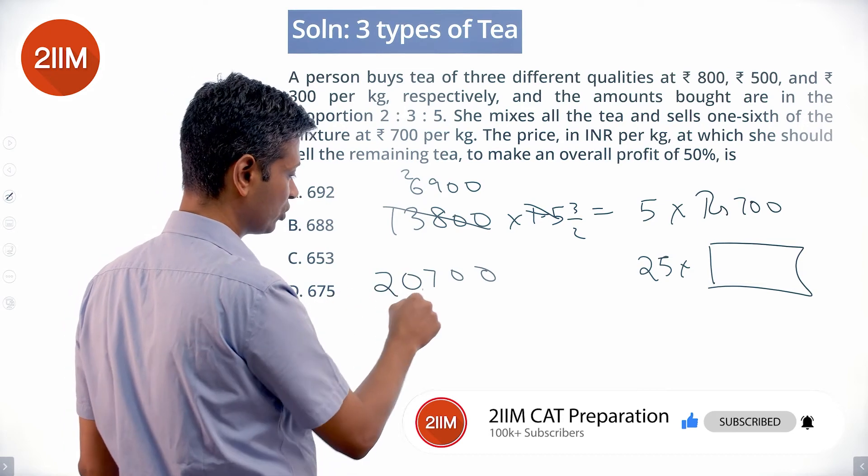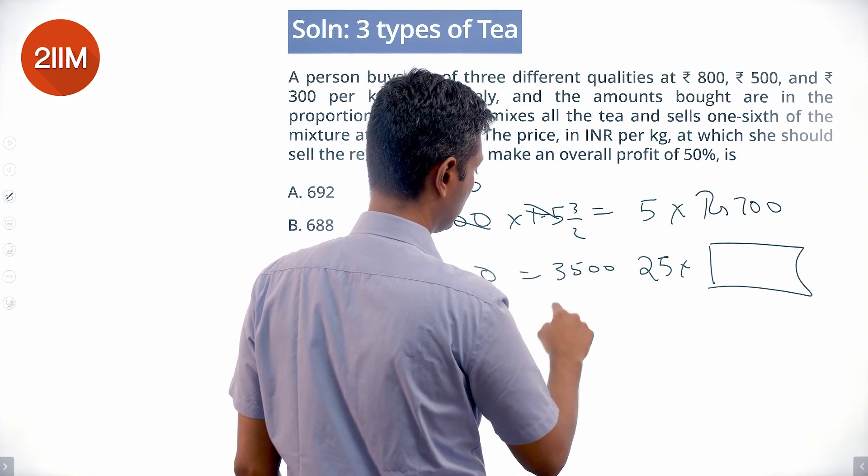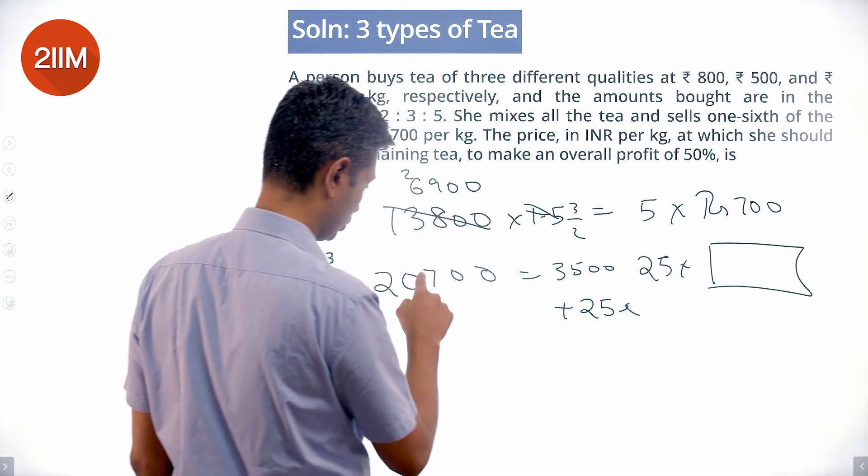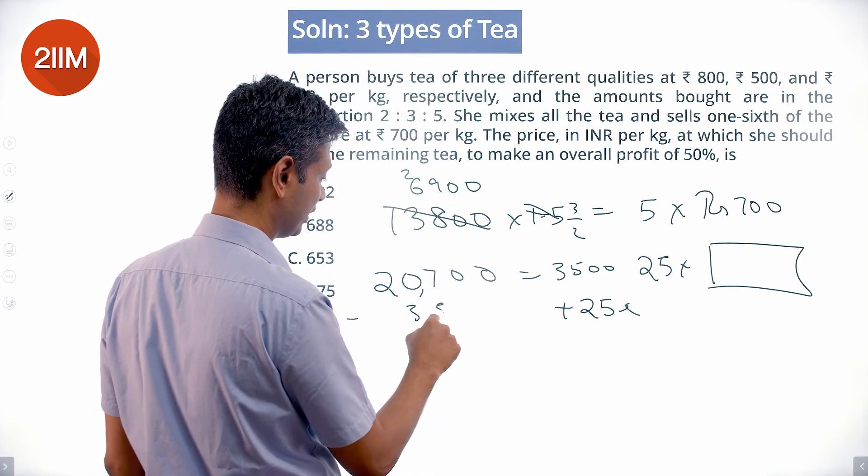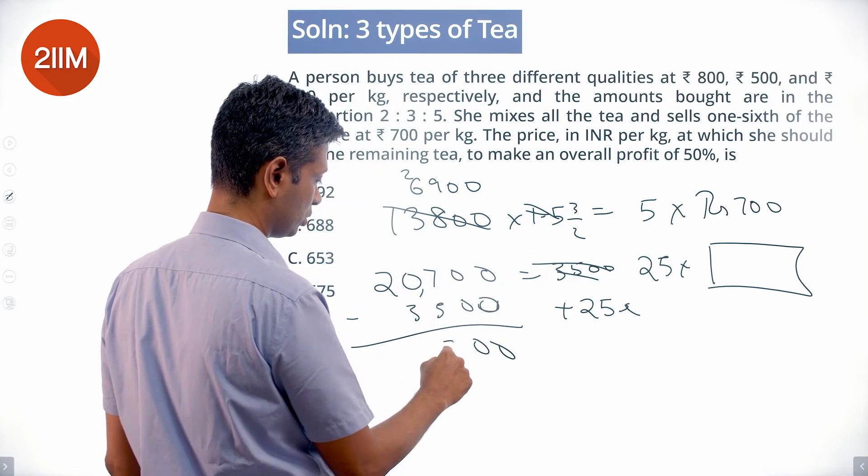From this we subtract 3500 and bring that to this side: 20,700 minus 3500.